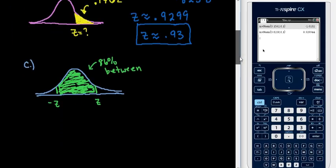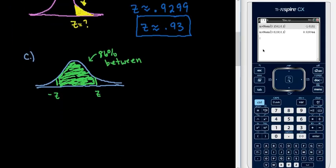And then the last one, in order to find the in-between, we have to know that the area to the left, the unshaded area, is equal to the area to the right of the z-score, of the positive z-score. So the area to the left equals the area to the right.